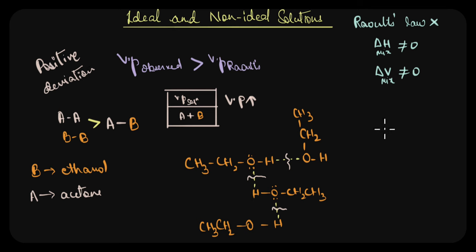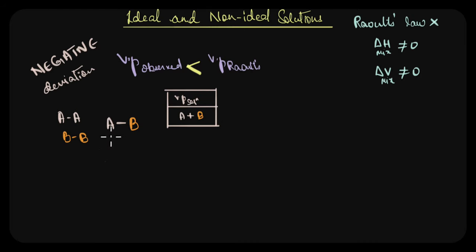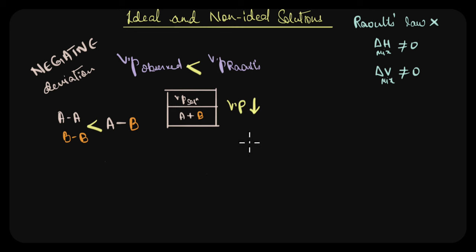Another example of a solution showing positive deviation is a mixture of carbon disulfide and acetone. In negative deviation, exactly the opposite occurs: the intermolecular attractive forces between A and B are stronger than those between AA or BB. The liquid molecules are content to stay bonded in solution and do not tend to escape into the gaseous phase, so the vapor pressure of the solution decreases. This happens when there is strong interaction between the solute and solvent molecules.